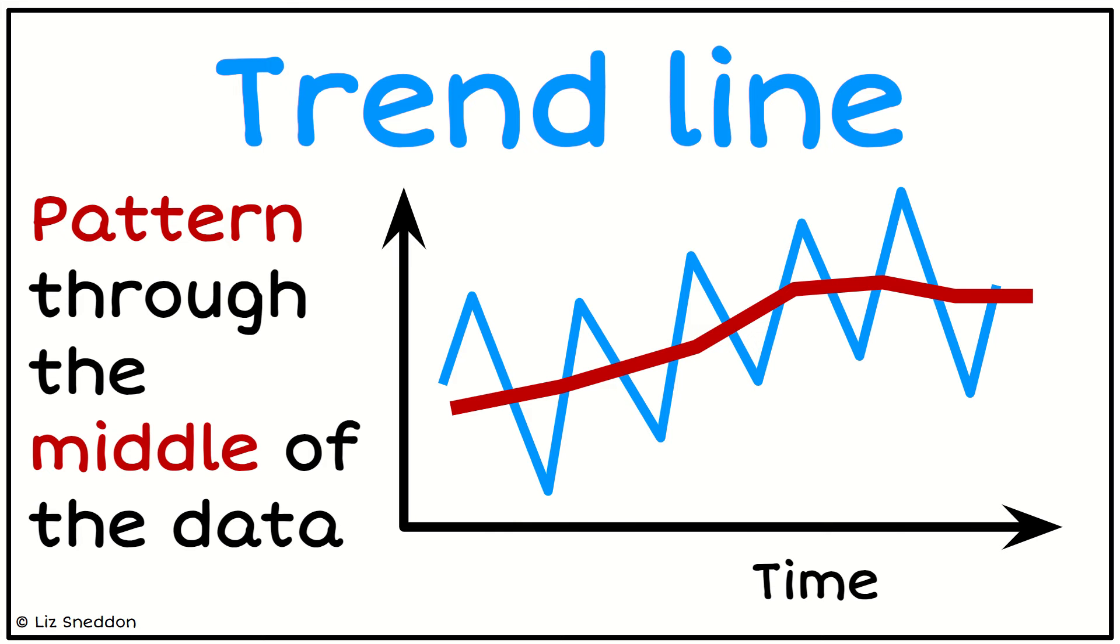So the trend line is the pattern that goes through the middle of the data. So we're looking to see what kind of pattern that forms, whether it goes up, down, sideways, or so on.